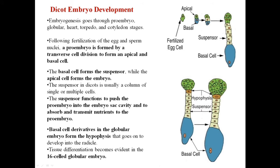The role that the suspensor plays is pushing the embryo towards the endosperm. The endosperm is a nutritive tissue and its nutrition is used for the development of the embryo. To get that nutrition, the embryo has to go to the endosperm, so the suspensor pushes the embryo towards the endosperm so that it can take all the nourishment. On the other hand, the apical cell undergoes division and forms a mass of cells — four cells are formed — this is called the pro-embryo, which on later development will form the embryo.